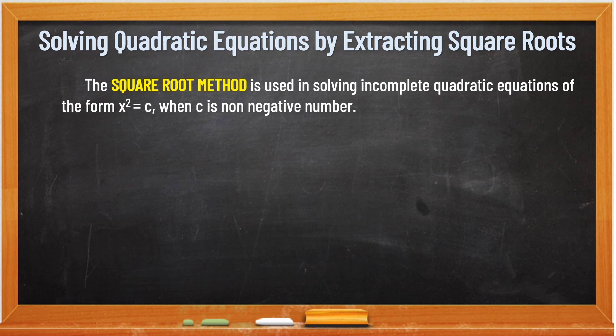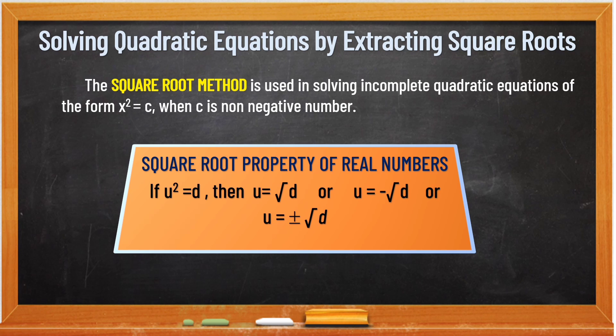Ang gagamitin natin is the square root method. The square root method is used in solving incomplete quadratic equations of the form x squared is equal to z, when z is a non-negative number. So ito na nga yung x squared is equal to z or x squared is equal to k. Ang gagamitin natin sa pagsusolve niyan, kapag ganyan na yung form niya, is yung square root method. Like this one: if u squared is equal to d, then u is equal to square root of d or u is equal to negative square root of d. Positive and negative yung nagiging sagot niya, or we write it as one: u is equal to positive or negative square root of d. Yan yung property na gagamitin natin sa pagsusolve nitong equations by extracting square roots.